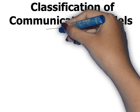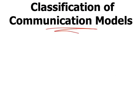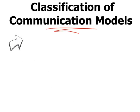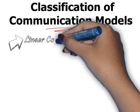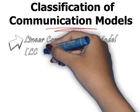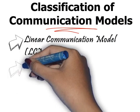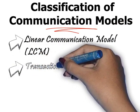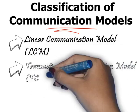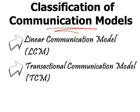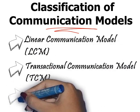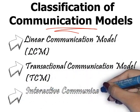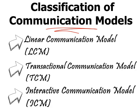Now let's start talking about the different classifications of communication models. We have three classifications. The first one is the LCM, or the Linear Communication Model. The second one is the TCM, or the Transactional Communication Model. And the last one is the ICM, which refers to the Interactive Communication Model, also known as the Convergence Model of Communication.